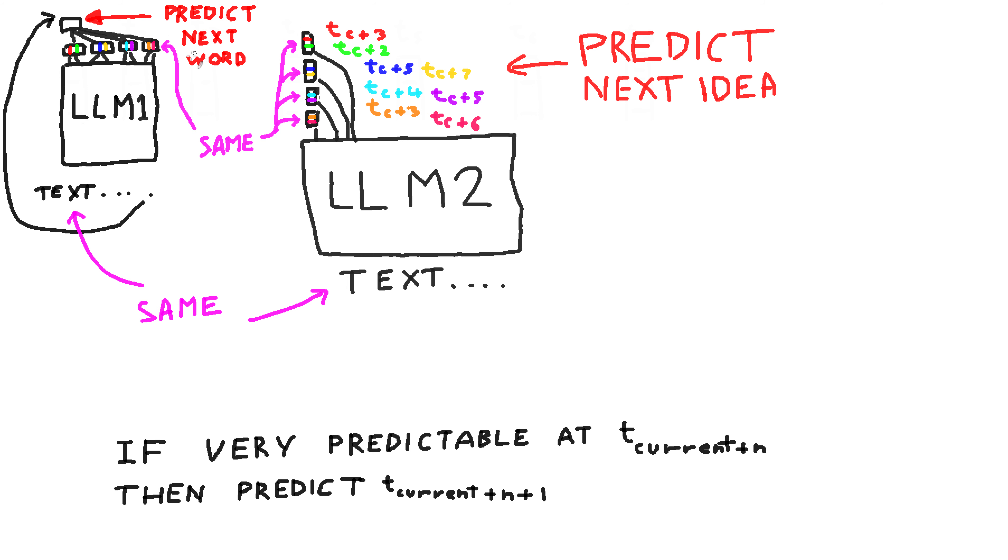Now, LLM number two is actually trained to predict these ideas, but of course it would be silly to predict ideas if they are already predicted with LLM one. So we don't predict ideas at the time that they're processed.